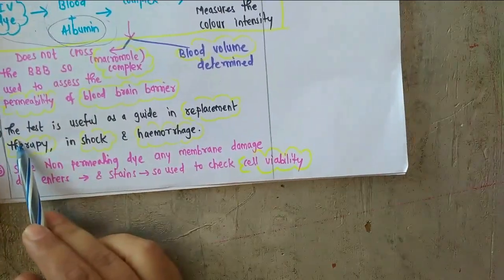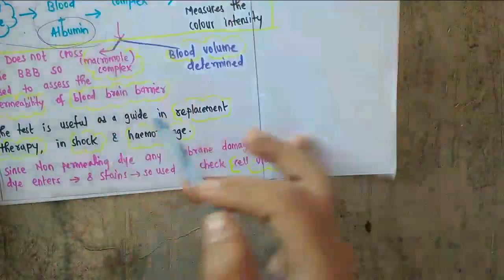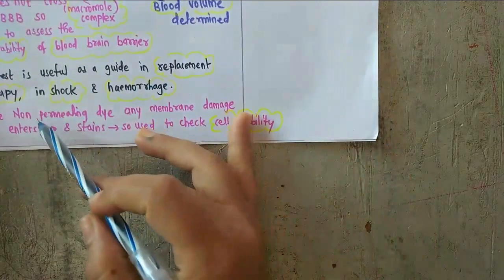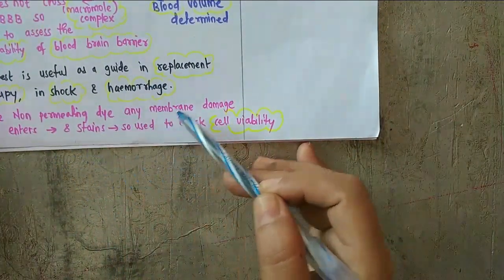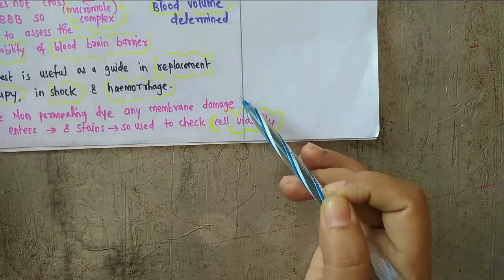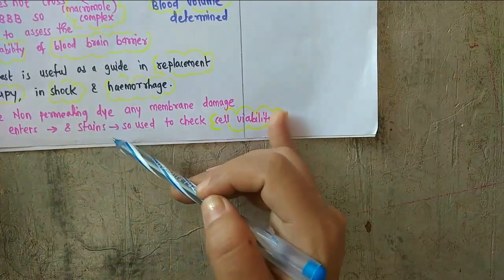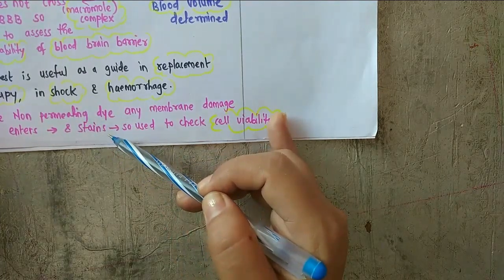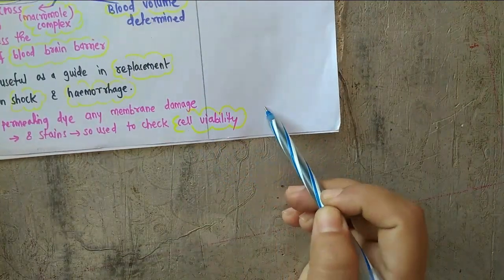Evans blue is also used as a guide in replacement therapy in shock and hemorrhage. Since it is a non-permeating dye, any membrane damage in the cell — say plasma membrane — will allow the dye to enter and stay in the cell components. So it is used to check cell viability.